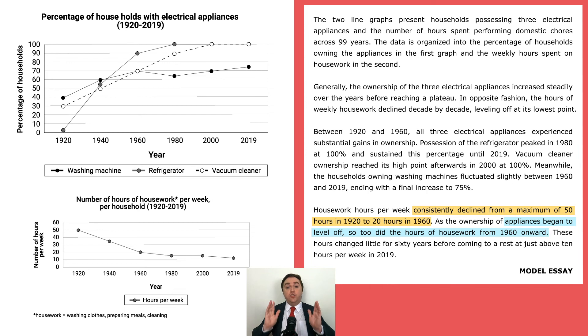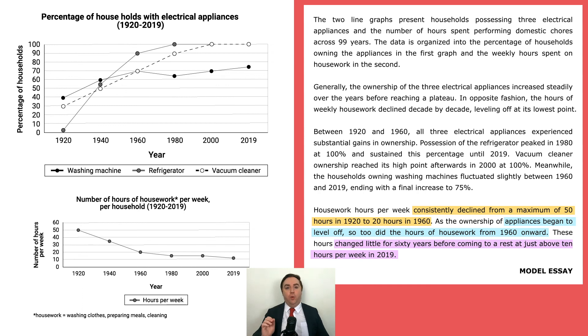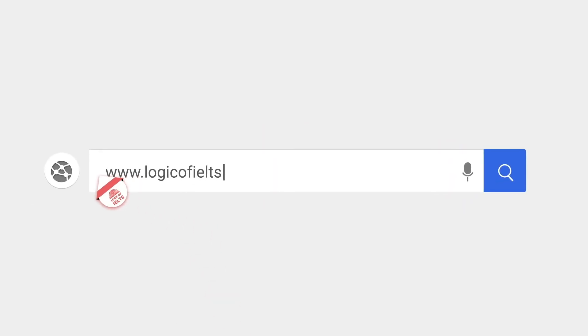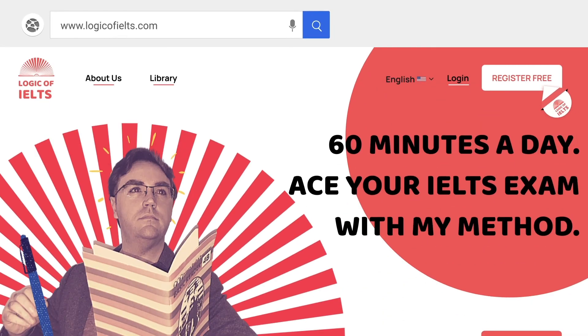This sentence covers two important pieces of information: the date 1960, and the shared feature of leveling off. Finally, I end paragraph 2 by describing the duration that housework leveled off and the final low point in 2019. And that is how the Logic of IELTS identifies what data to include and exclude from Writing Task 1. As always, send me a message or comment if you need any help with this skill. Check out our beautiful website at logicofIELTS.com to register for a free account and see even more content.